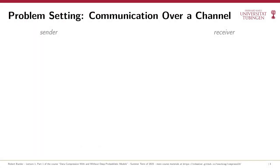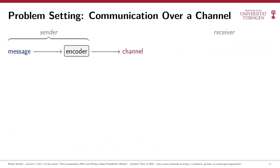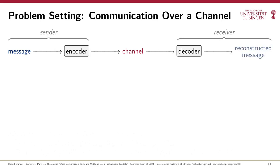Let's assume that we have two parties, a sender and a receiver, and the sender has some message it wants to communicate to the receiver over some channel, like the internet. Since you can't just talk directly into your Ethernet socket, the sender will have to encode the message so it can be transmitted over the channel, and the receiver has to decode whatever it receives to obtain a reconstruction of the message. Depending on your use case, you might either want a perfect lossless reconstruction, or for things like audio or video signals, you might be okay with a lossy reconstruction that differs slightly from the original, as long as these differences are hardly perceptible.